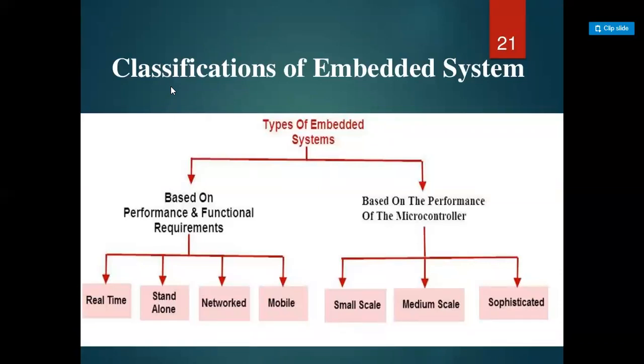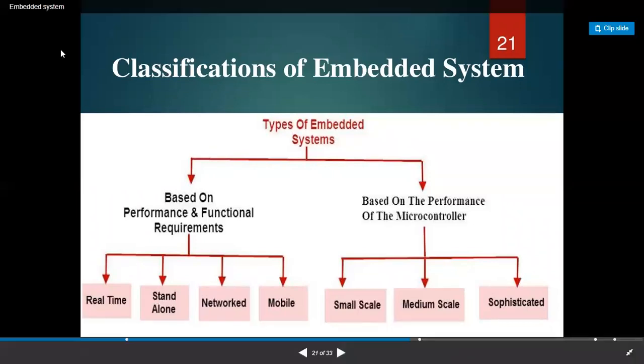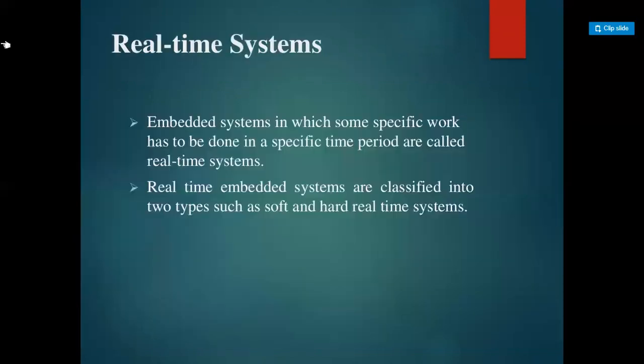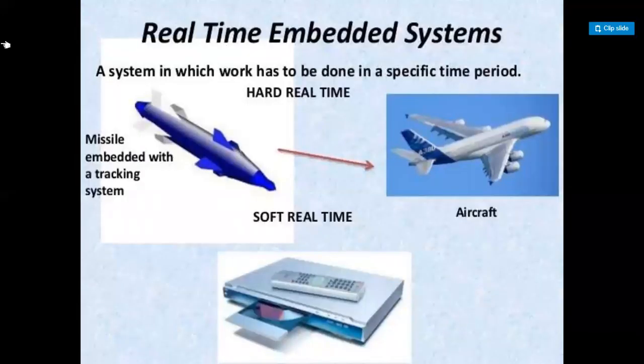Types of embedded systems: classification can be done in two ways — based on functional and performance requirements, or based on the microcontroller. Based on microcontroller, categories are small-scale, medium-scale, and sophisticated. Based on performance and functional requirements, categories are real-time, standalone, network, and mobile. Real-time embedded systems require specific work to be done within a specific time period. They are classified into hard real-time (e.g., missile tracking systems, aircraft) and soft real-time (e.g., DVD players).